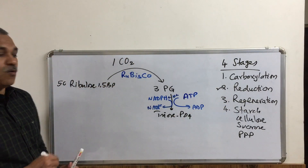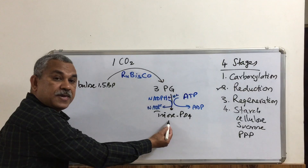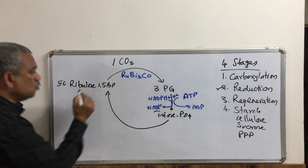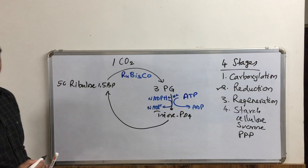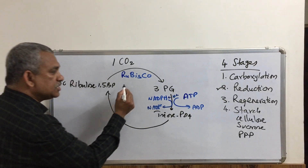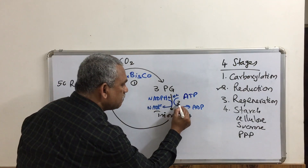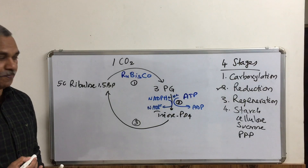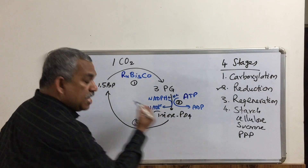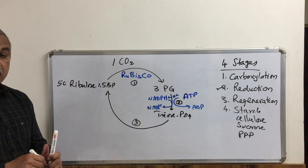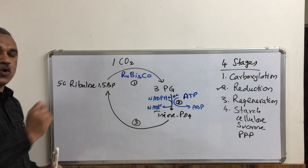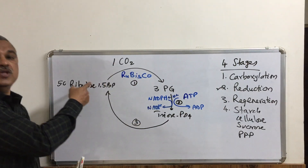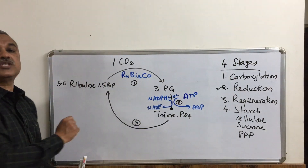The third step is the regeneration step. Step one is the carboxylation, step two is the reduction, and step three is the regeneration of ribulose 1,5-bisphosphate. To understand the whole concept, let us trace how we get back ribulose 1,5-bisphosphate.